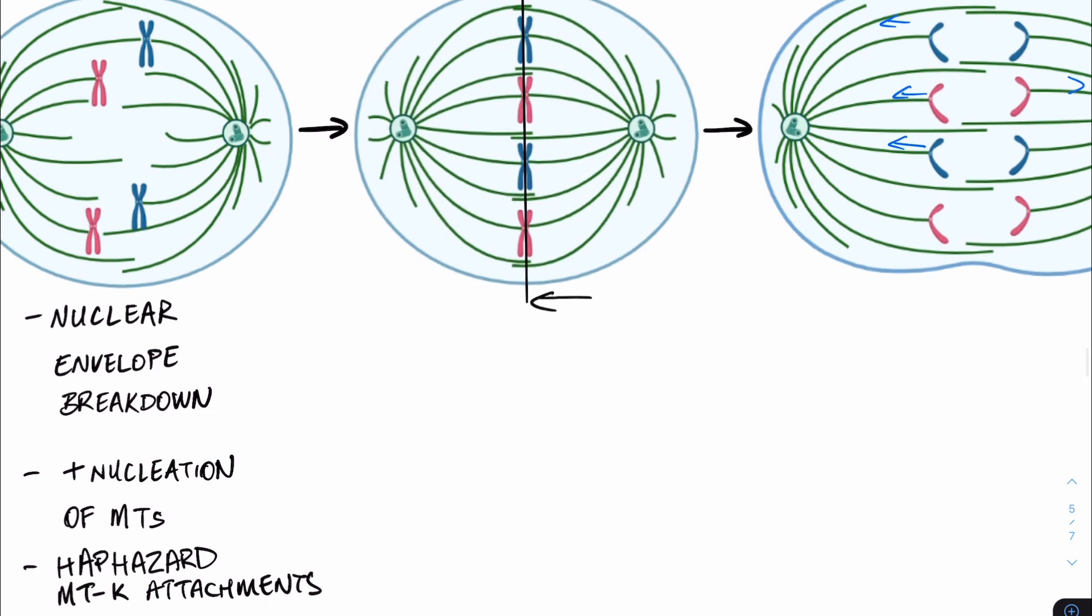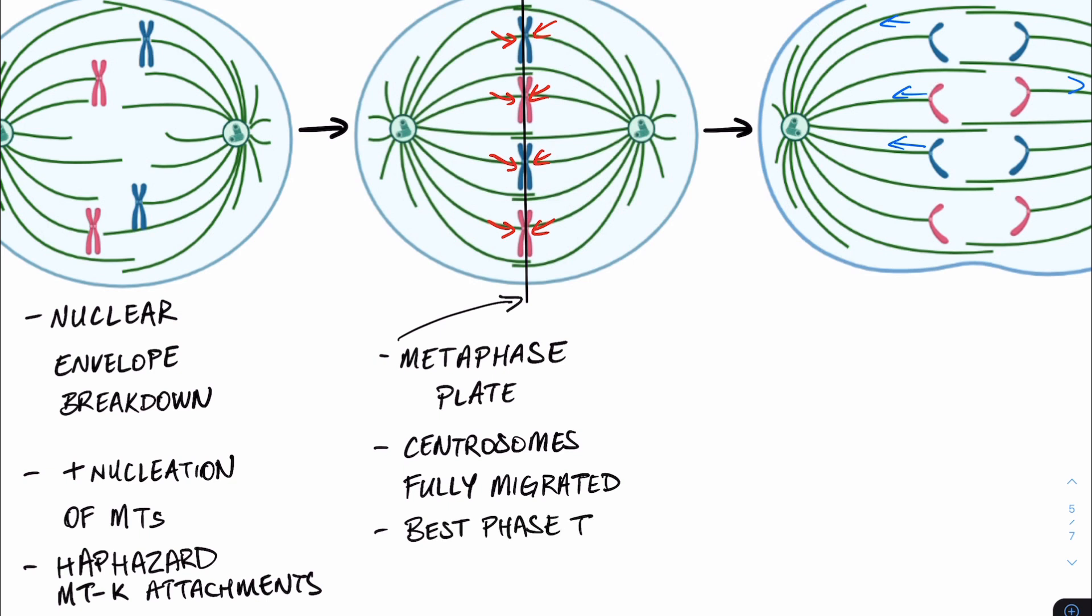When microtubules from each spindle pole attach to the appropriate sister chromatid and apply equal tension, this pulls the chromosomes into an equatorial plate which is called the metaphase plate, and this lines up the chromosomes in the centre of the cell, roughly equal distance between the two spindle poles. The appearance of the metaphase plate signifies the phase metaphase, and during this phase the centrosomes are also fully migrated to perfectly opposite ends of the pole to prepare us for the next phase.